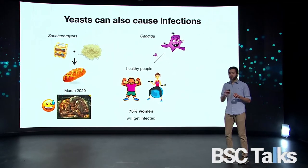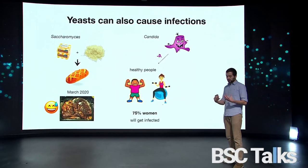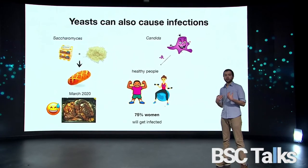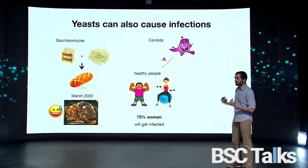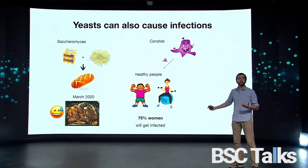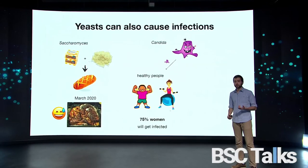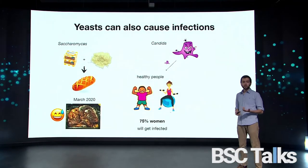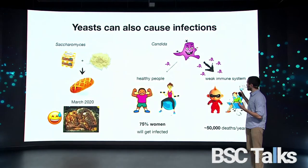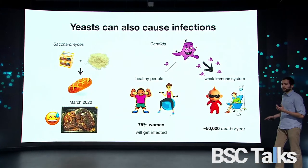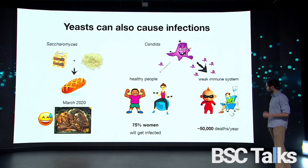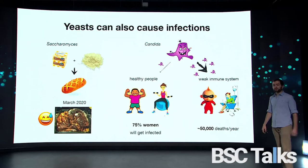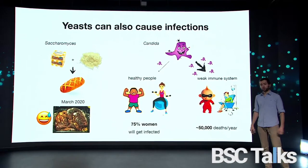Candida are the ones that cause candidiasis. Usually they live inside our body, and in healthy people they cause mild infections — though they can still be pretty annoying, and they will infect 75% of women during their lifetime. The problem is that they can be very aggressive for those with a weak immune system, such as neonate babies or patients undertaking chemotherapy. They cause 50,000 deaths each year worldwide.